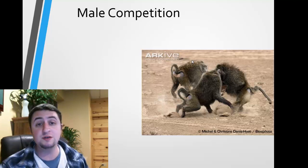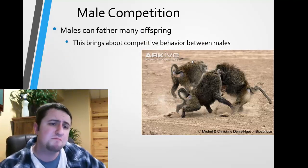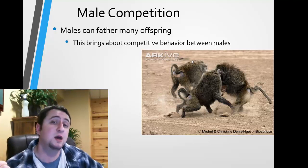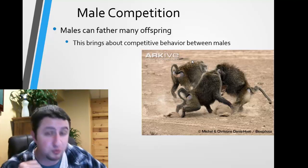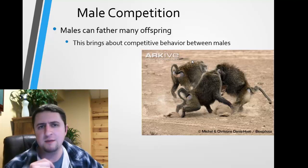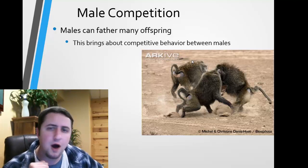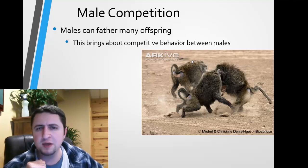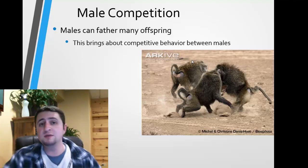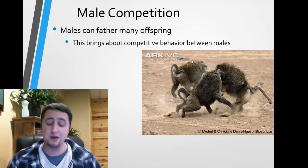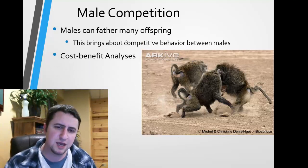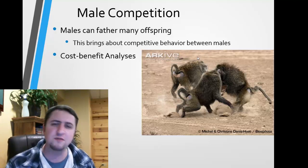Another really good example of sex selection is male competition. Males have the ability to father many offspring very quickly — for example, one male may be able to produce 50 offspring in a day. But females have to go through pregnancy, which takes much longer, so they don't have the ability to produce offspring as quickly. Because males can spread their genes rapidly across many mates, there becomes a lot of competition among males, which brings about the idea of cost-benefit analysis.